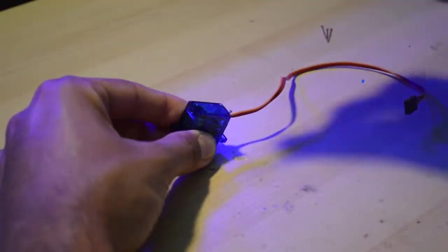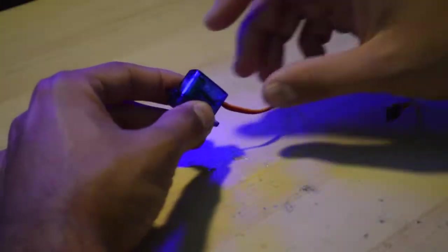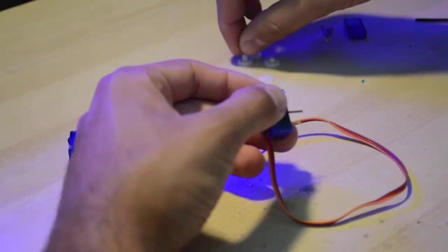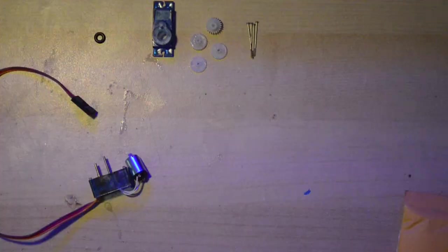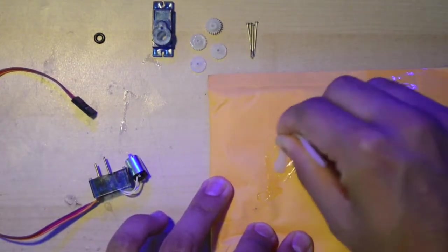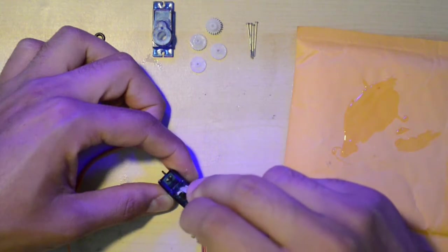Step one is to get out the tiniest screwdriver I could find and totally disassemble the servo. I remove both lids as well as all of the gears and the motor before I mix some epoxy to coat the tiny circuit board with it.